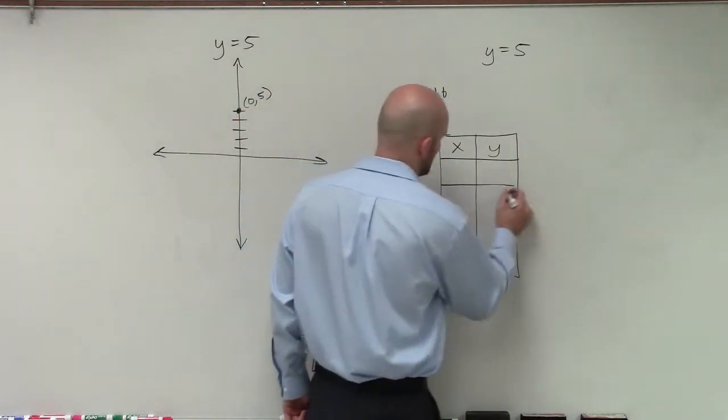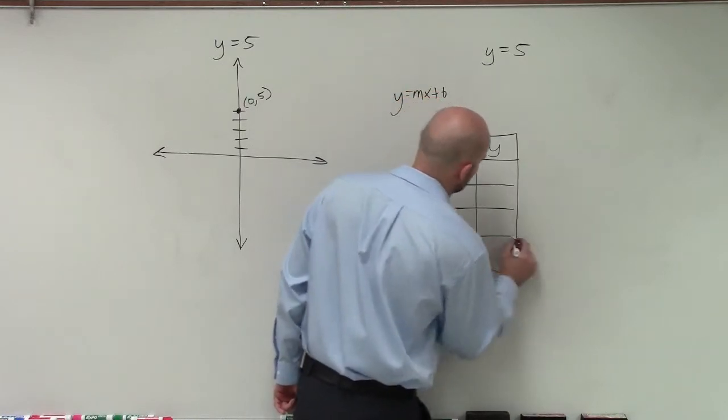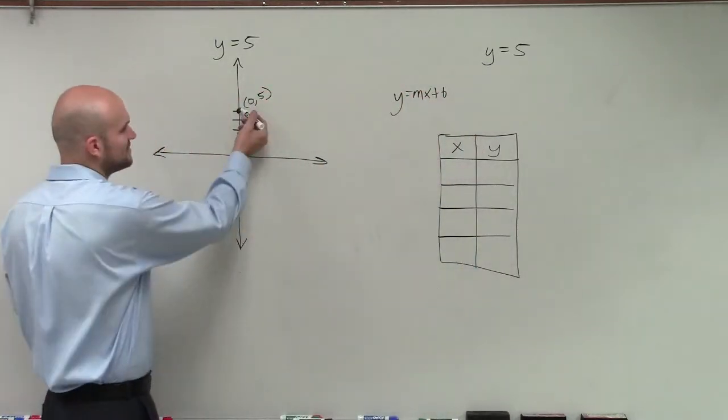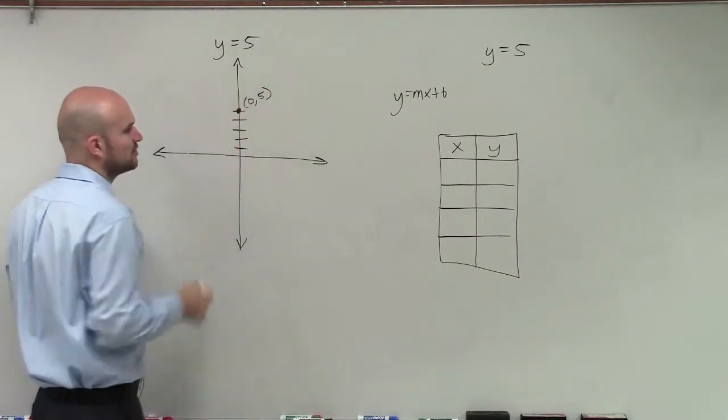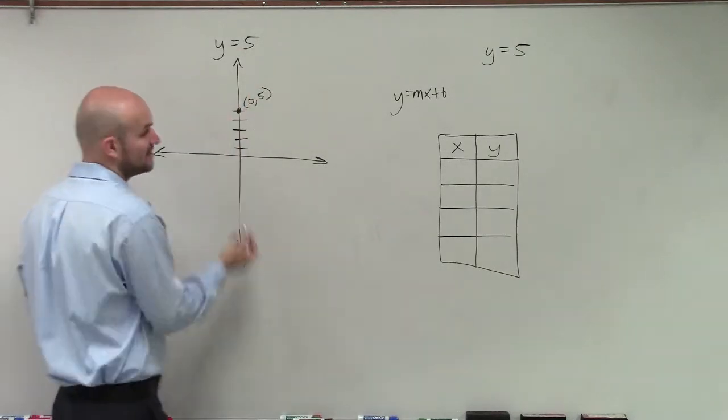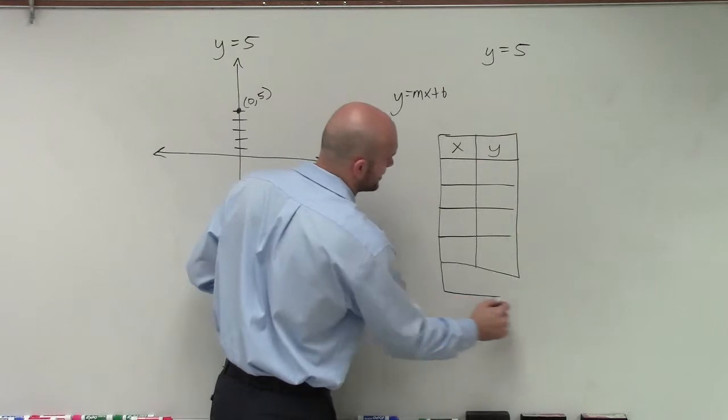Now, when choosing a table of values, a lot of times what you like to do is pick two values that are to the left of the y-intercept and two values to the right of the y-intercept. And then let's also include the y-intercept as well.